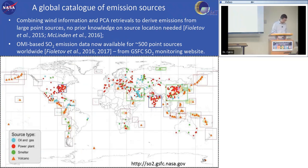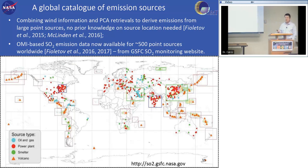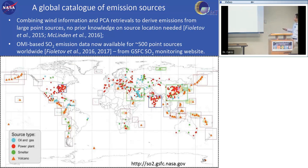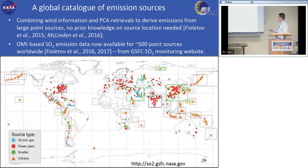With this improved dataset, we can look at SO2 emission sources. Our colleagues at Environment and Climate Change Canada — Vitaliy Fioletov and Chris McLinden — developed a method combining wind information with our PCA-based SO2 retrievals to estimate SO2 emissions from large point sources. From OMI, we can estimate emissions for about 500 sources globally on an annual basis. These include power plants, oil and gas facilities, smelters, and volcanoes. This OMI-based emission database is available for download from our SO2 website.